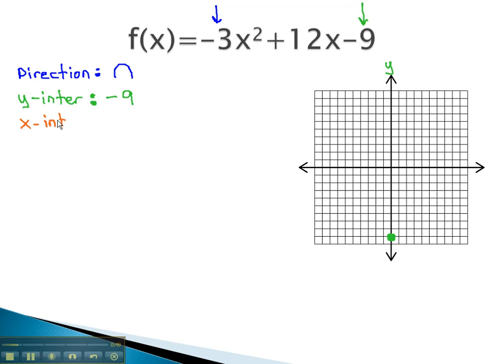Next, we look for the x-intercepts, where the graph crosses the x-axis by making the equation equal to 0. If we have negative 3x squared plus 12x minus 9 equals 0, we can solve this by factoring.